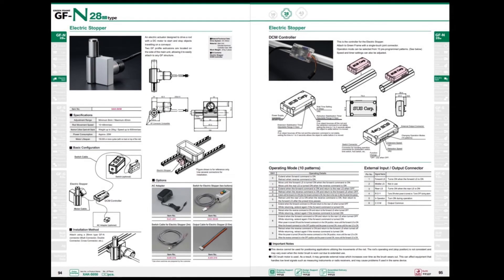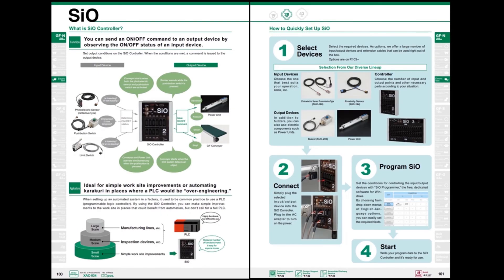There's no need for a PLC or even a computer. Just follow the instructions on page 94 of the GF catalog to operate the electric stopper. To link this unit to other modules, simply plug it into SUS's SIO controller found on page 100.